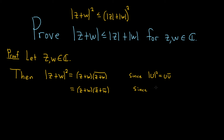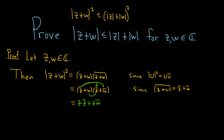Since whenever you have z plus w and you take the conjugate, it's just going to be the conjugate of the sums. The next step is just regular multiplication — we distribute. So we get z times z-conjugate, plus z times w-conjugate, plus w times z-conjugate, plus w times w-conjugate.